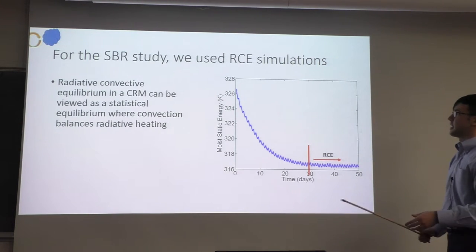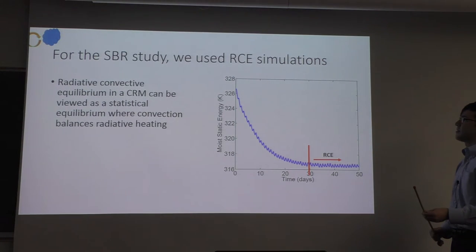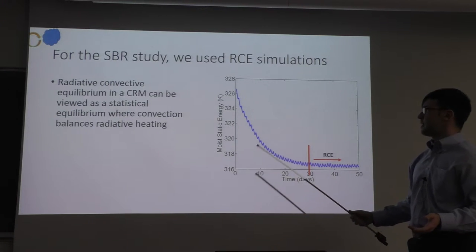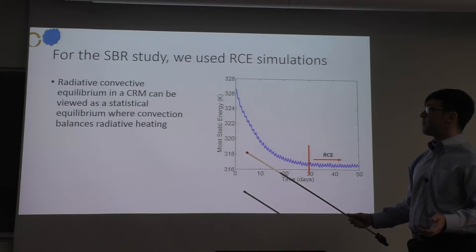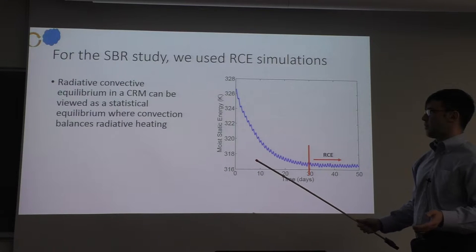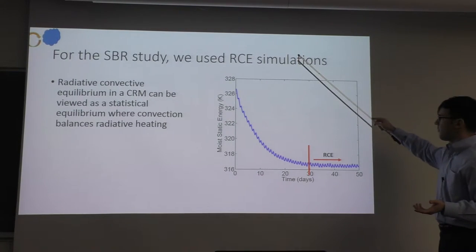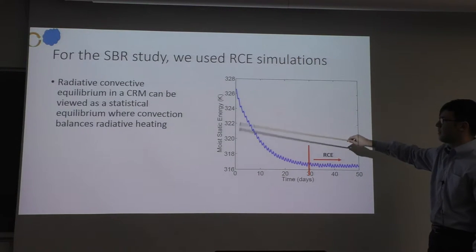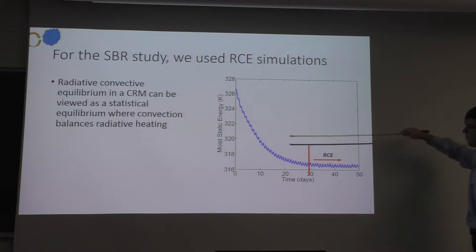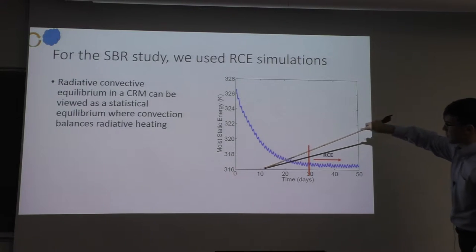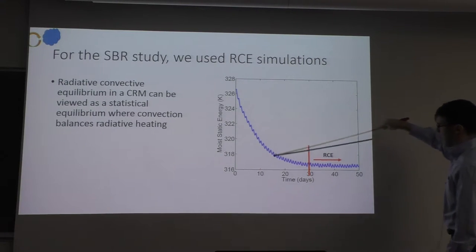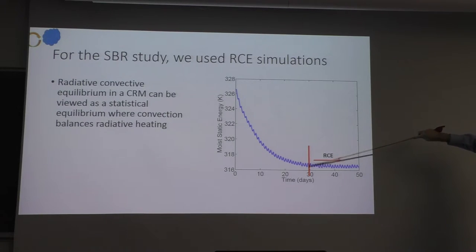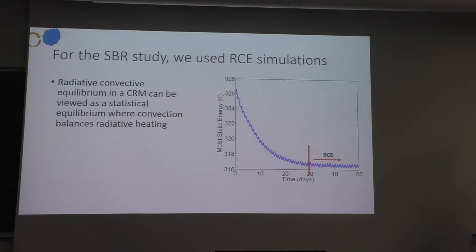For our Bowen ratio study, we use radiative-convective equilibrium simulations — RCE. RCE in the cloud-resolving model is a statistical equilibrium where convection is balancing the radiative cooling. This plot shows the moist static energy of the 500 hPa level versus time. The moist static energy drops rapidly and then stabilizes; after day 30 or so, every following day is approximately the same statistically. This is our statistical equilibrium.